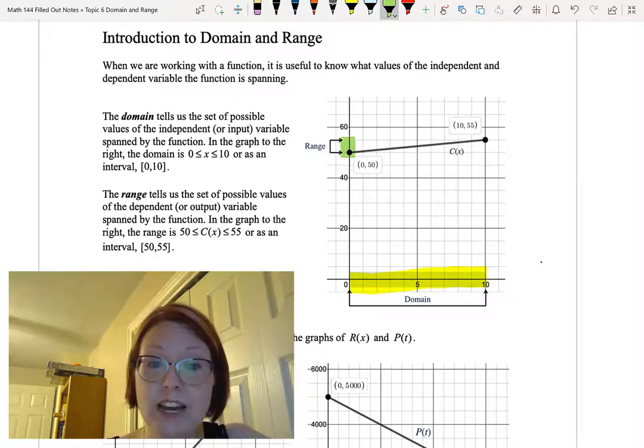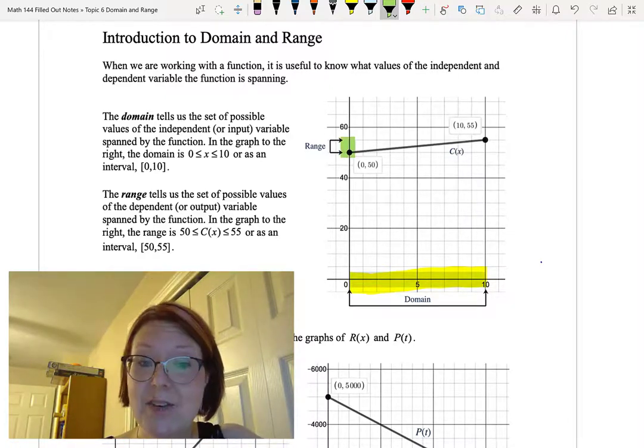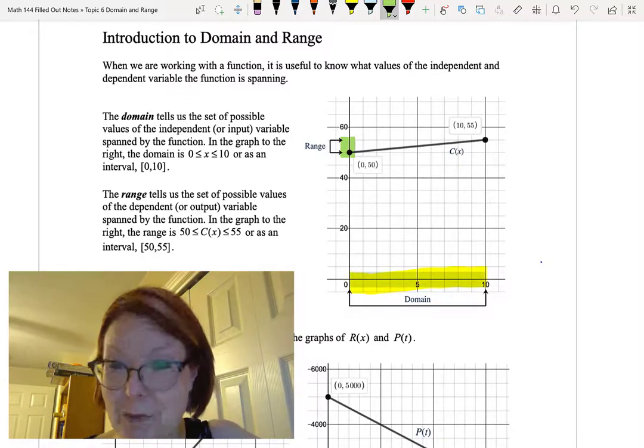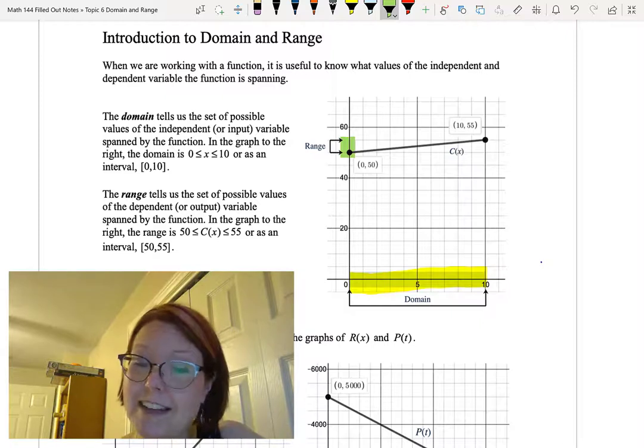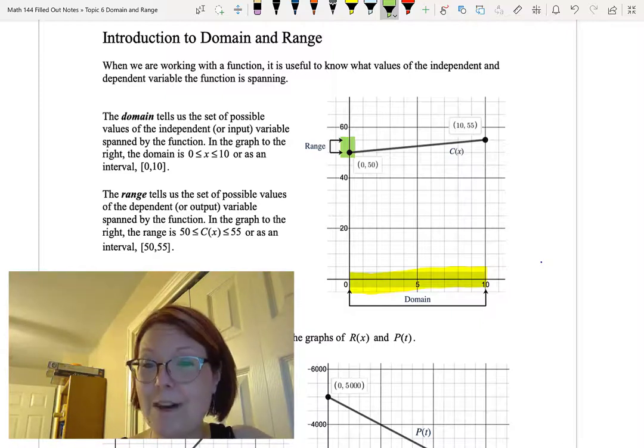We could write the range as 50 is less than or equal to c of x is less than or equal to 55. The graph by the way is labeled c of x. We could also write that in interval notation as left bracket 50 comma 55 right bracket.